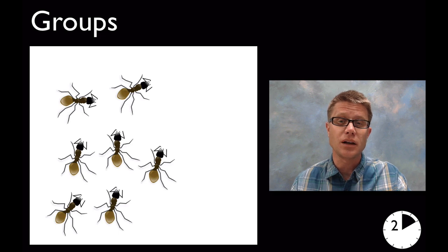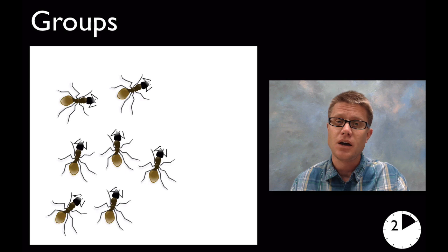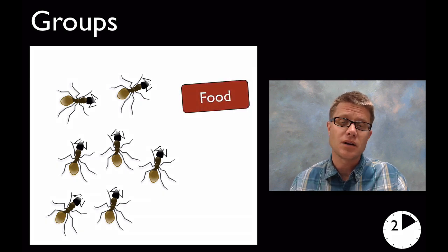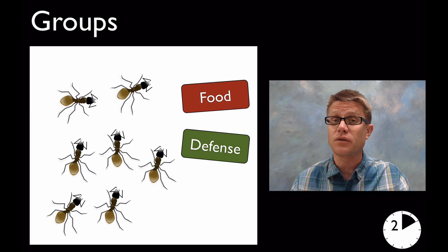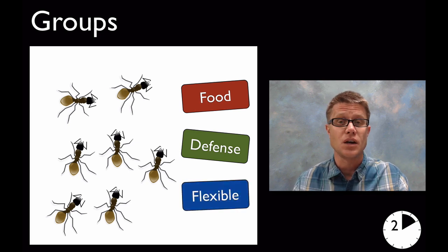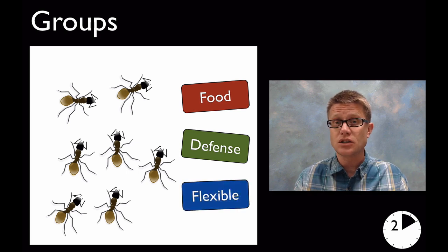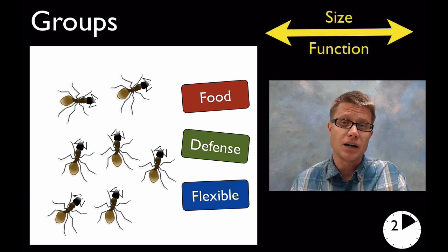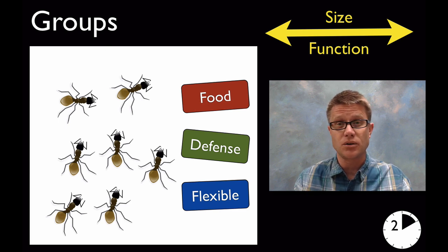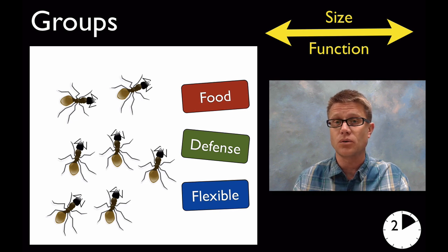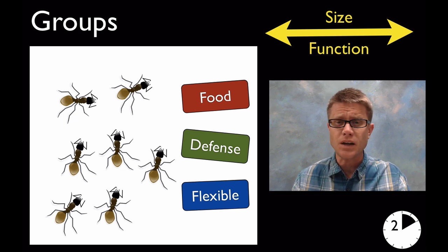So how do you teach this? In the lower elementary grades, start talking about groups. An example could be these ants — why are they forming groups? It allows them to find more food, it allows better defense, and it allows flexibility to respond to change more effectively. You also have to emphasize that groups vary in size from very small groups of just a few individuals to groups containing thousands of organisms, and the function changes as well — sometimes it's for feeding, sometimes simply for protection.